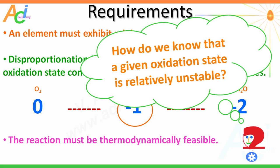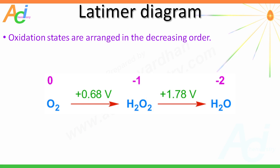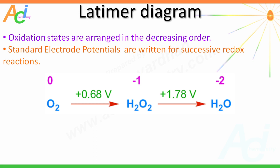Let us have a brief description of a Latimer diagram. In this diagram, the oxidation states of an element are arranged in decreasing order and the standard electrode potentials are written for successive reduction reactions. From this diagram, it is possible to identify the less stable oxidation state that can undergo disproportionation.